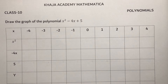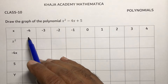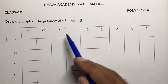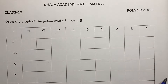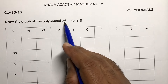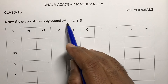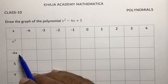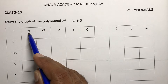We are going to draw the graph of the polynomial x² - 4x + 5. First, I take the values of x like -4, -3, -2, -1, 0, 1, 2, 3, 4. Then I write the equation with its terms: x² minus 4x plus 5.